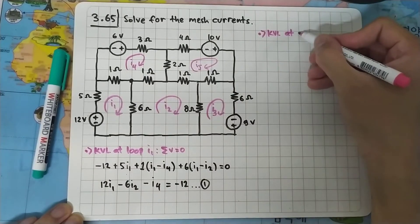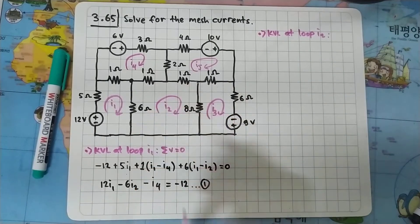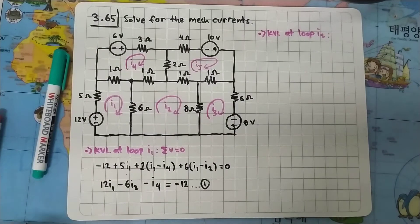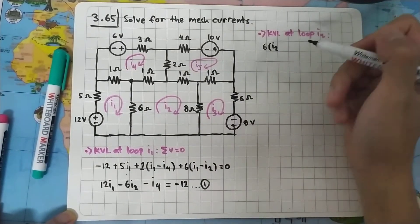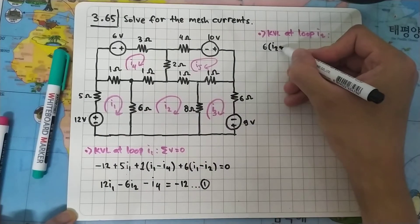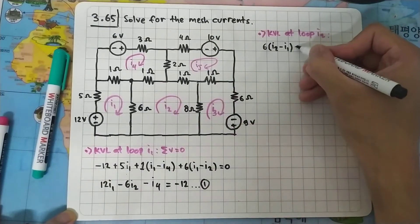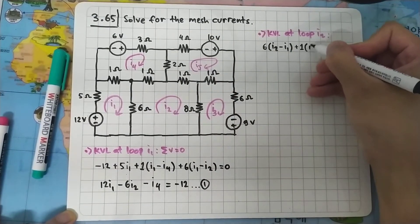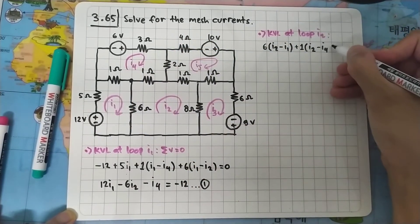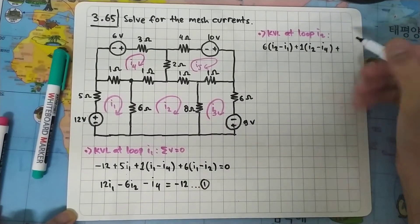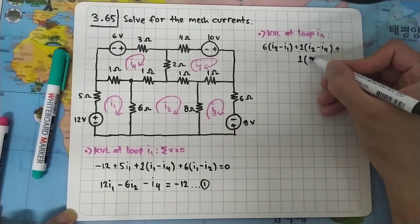Now doing KVL at loop I2. Starting from the 6 ohm resistor, the focus is on I2, so we multiply by I2. I1 is flowing in the opposite direction, so minus I1. Moving on to the 1 ohm resistor, our focus is I2, but I4 is flowing in the opposite direction, and then we move on to another 1 ohm resistor where the focus is still I2.